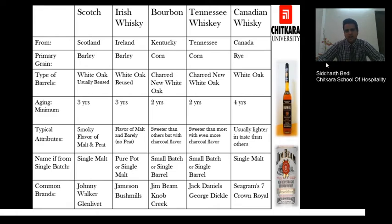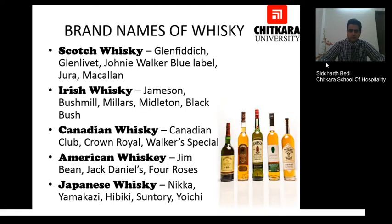The last category is Canadian whisky, made with rye in white oak barrels, with a minimum aging of four to five years. It is usually lighter in taste than others, and single malt style is used. Seagram's 7 and Crown Royal are a few brands in this category.